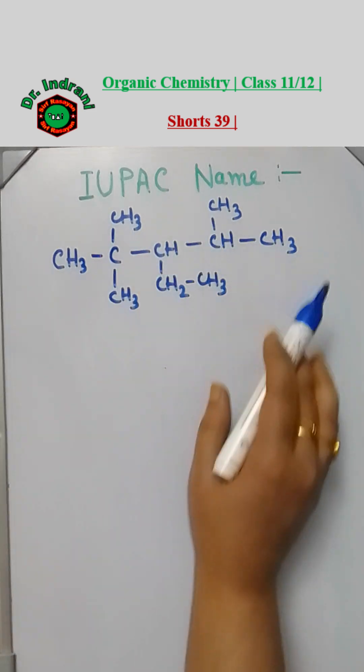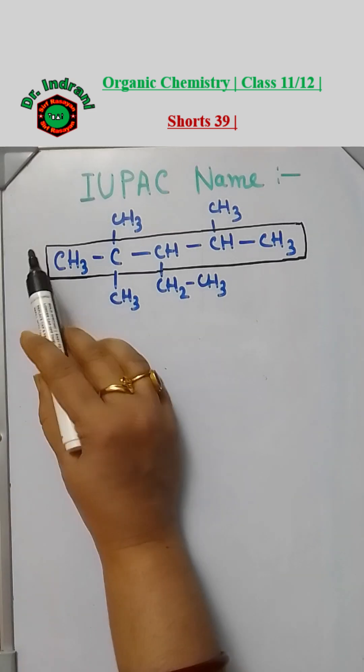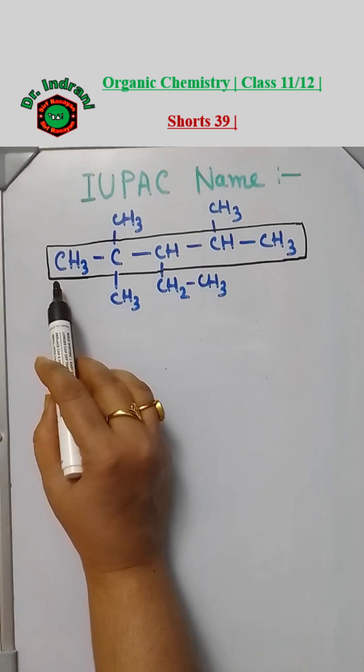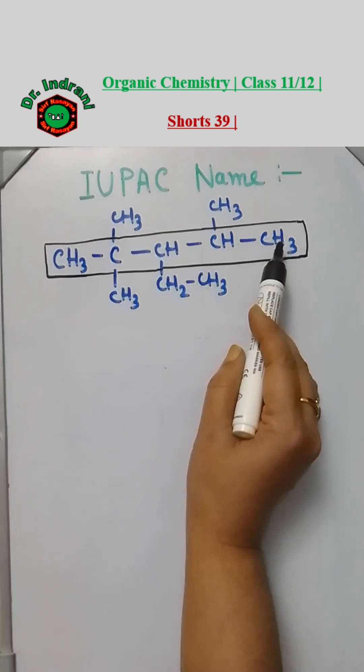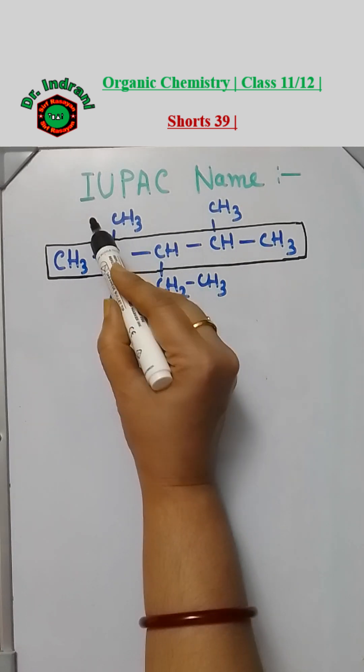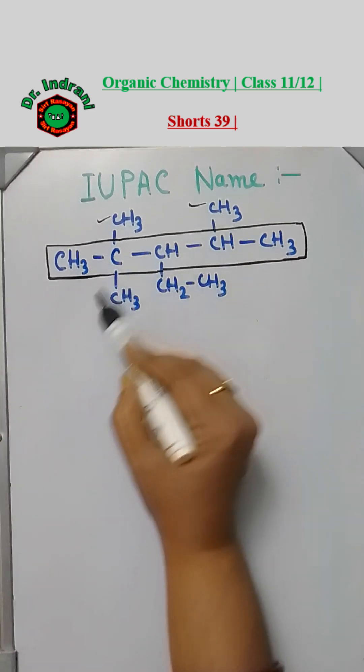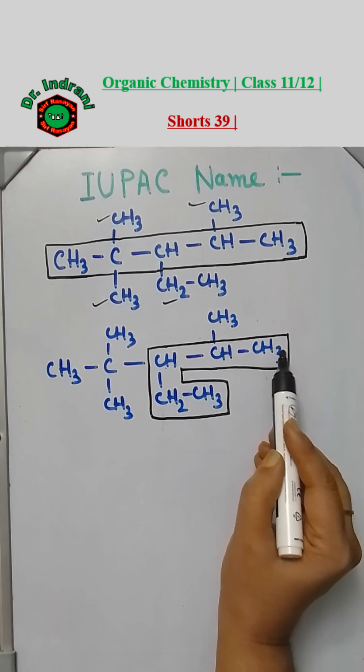Hello students, what is the IUPAC name of this compound? If you consider this chain as the longest chain, having one, two, three, four, five carbon atoms, the number of substituents are one, two, three, four. If you consider this chain as the parent chain, the number of substituents are two.